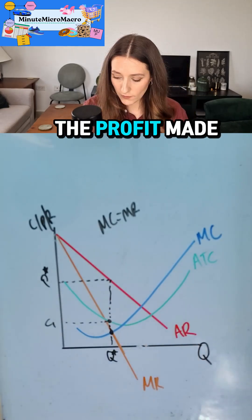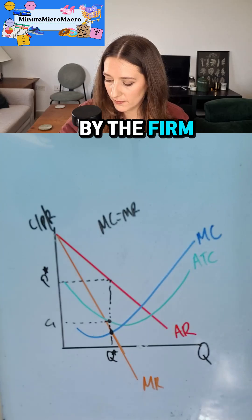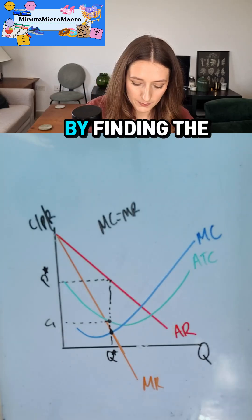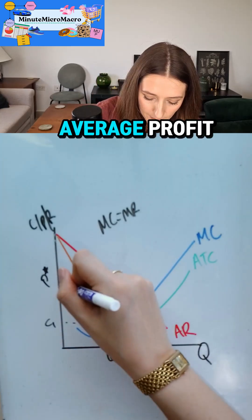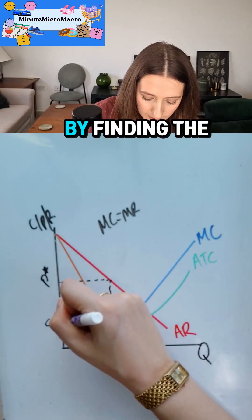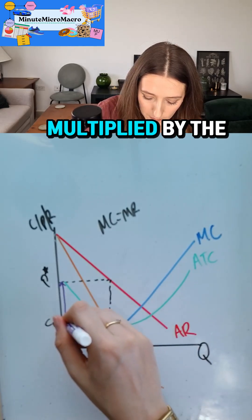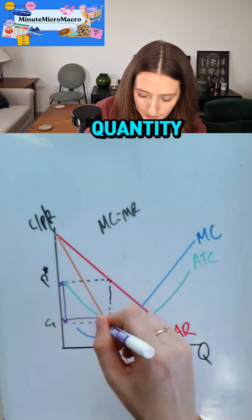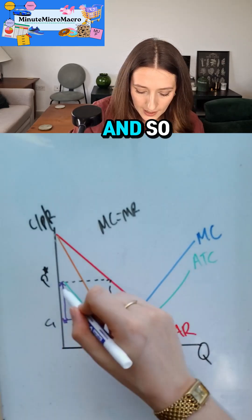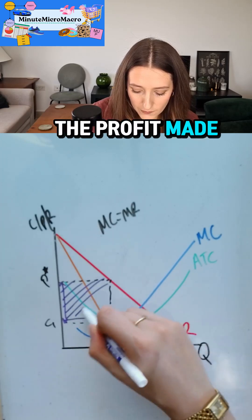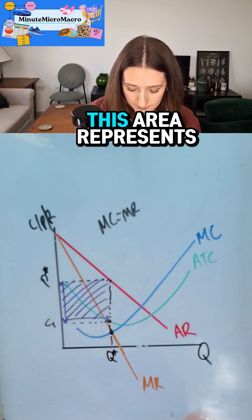We know that the profit made by the firm is calculated by finding the average profit — the difference between the price and the cost — multiplied by the quantity. So this shaded area represents the profit made by the firm.